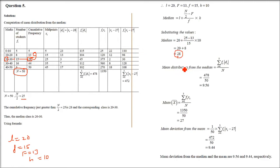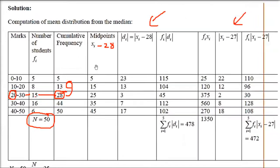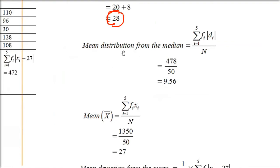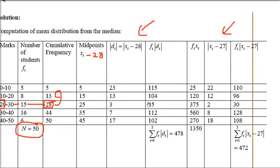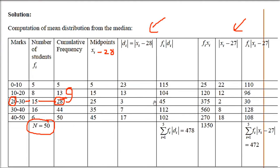With median = 28, compute Di = |Xi − 28|: |5−28| = 23, |15−28| = 13, and so on (taking positive values). Multiply fi by Di, sum all to get Σ(fi×Di) = 478. Divide by capital N to get mean deviation from median = 9.56.